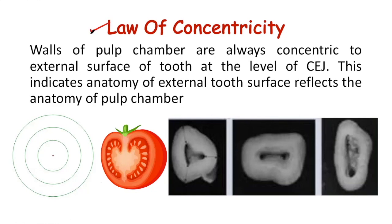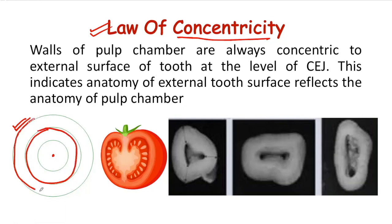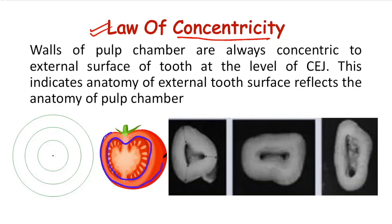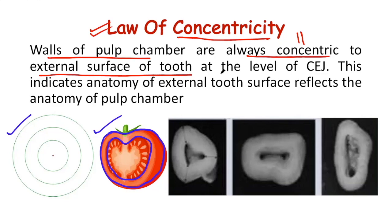The second law is the law of concentricity. Two or more objects are said to be concentric when they share the same center or axis. In our case, one object will be the pulp chamber and the other concentric object will be the anatomy of the external tooth surface. Similarly, in this image of a cut tomato, you can see the inner surface showing the pulp, and the outer anatomy, which is almost similar to the inner anatomy — so these are also concentric. The law of concentricity says that walls of the pulp chamber are always concentric, or in our terms, parallel to the external surface of the tooth at the level of CEJ.